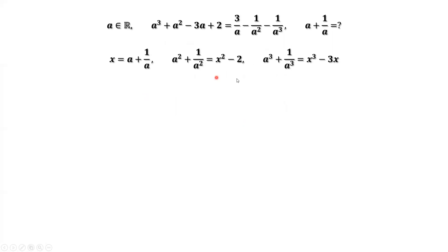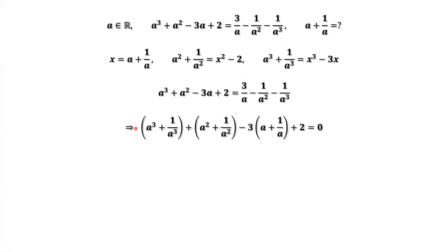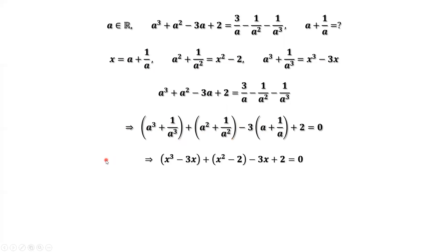We now have three results. We are ready to rewrite the given equation in terms of x. Move everything to the left-hand side and simplify. Grouping: the first part uses the third result, the second part uses the second result, and the last part uses the first result. Rewriting and simplifying the left-hand side in terms of x, we arrive at a degree 3 equation.